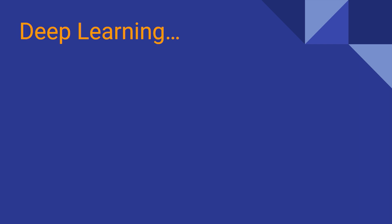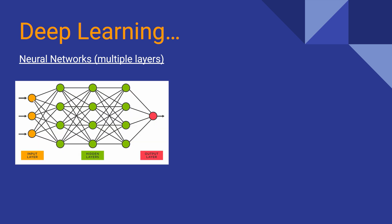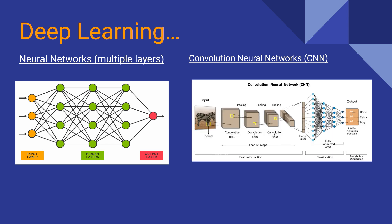Deep learning is based on neural networks. Data goes in as input through a black box neural network and produces an output. Convolutional Neural Networks, or CNNs, process image data using pixels and RGB color values ranging from 0 to 256.